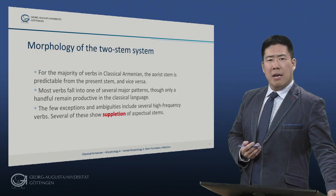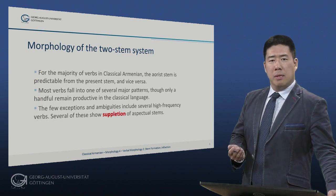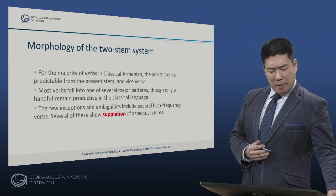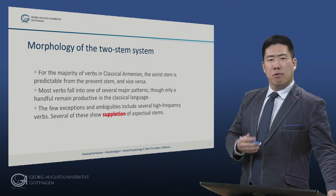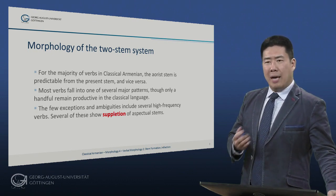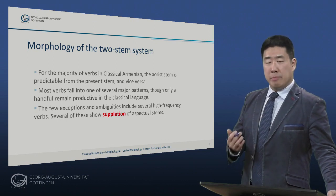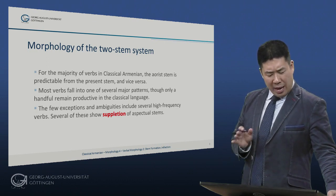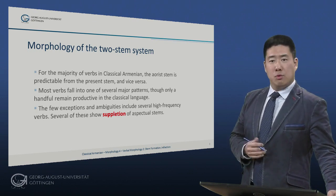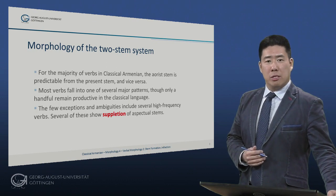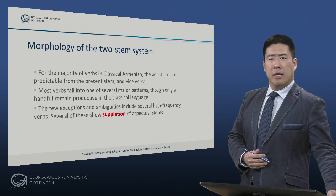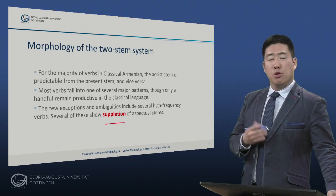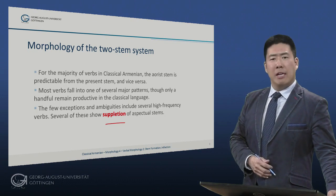As pointed out in the previous lecture, classical Armenian has a two-stem system. All verbs which show full inflection have two stems, traditionally called present and aorist. For the great majority of verbs, the aorist stem is predictable from the present stem and vice versa, so it is not strictly speaking a matter of having to learn two completely random stems for every verb. Most verbs fall into one of several major patterns, though only a handful remain productive in the classical language. The few exceptions and ambiguities, unsurprisingly, include several high-frequency verbs, and several of these show suppletion of aspectual stems, where you have two completely different stems for present and aorist.